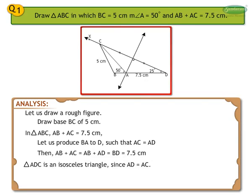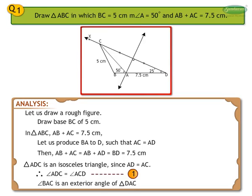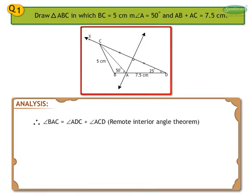Triangle ADC is an isosceles triangle since AD is equal to AC. Therefore, angle ADC is equal to angle ACD — statement 1. Angle BAC is an exterior angle of triangle DAC. From the remote interior angle theorem, angle BAC is equal to angle ADC plus angle ACD, which equals 2 times angle ADC from statement 1. Therefore, 2 times angle ADC equals angle BAC.